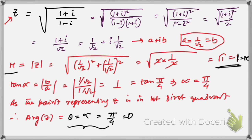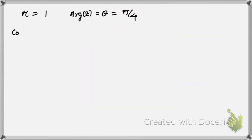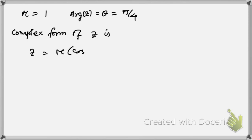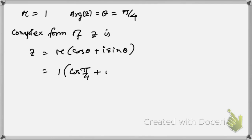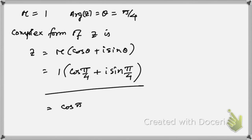Therefore the polar form of z is z = r(cos θ + i sin θ) = 1·(cos(π/4) + i·sin(π/4)), which simplifies to cos(π/4) + i·sin(π/4). That's how we find the modulus, argument, and express a complex number in polar form.